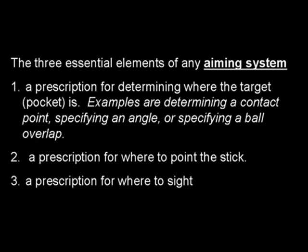There is a lot of discussion about aiming systems, and I am going to define an aiming system as having three essential elements. First is a prescription for where the target is, where the pocket is. Second is a prescription for where to point the stick, the stick line. And third is a prescription for where to sight, the sight line. If a so-called system is missing one or more of these essential elements, then it may be very valuable information, but it is not an aiming system. Prescriptions for where the pocket is can take many forms. You could be determining a contact point. You could be recognizing or specifying an angle, or you could be recognizing or specifying a ball overlap.